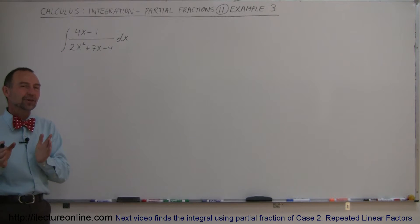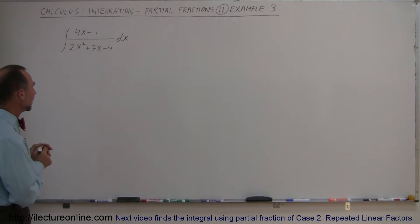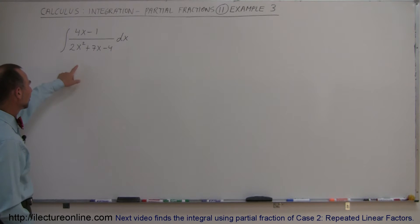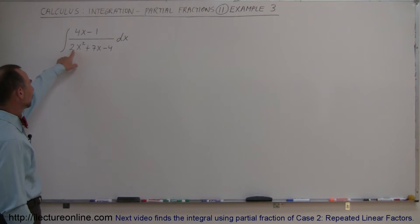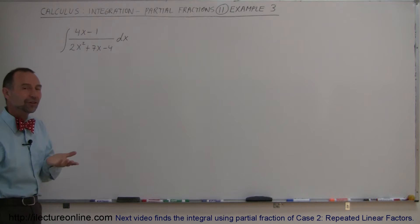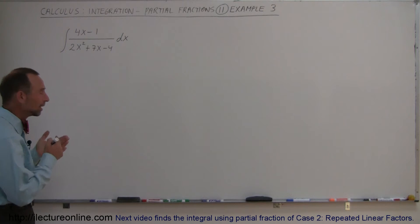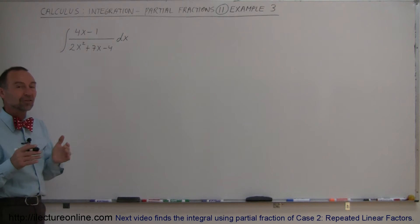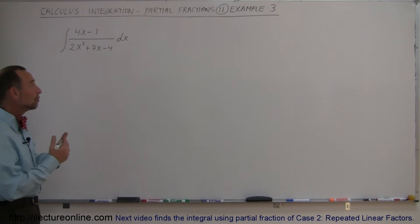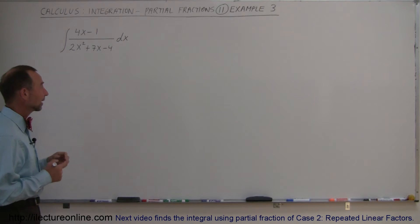Before we can do that, we have to factor the denominator. Since the x-squared term does not have a 1 as a coefficient, the factoring is going to be a little bit more complicated, so let's review how we would factor something that looks like this.